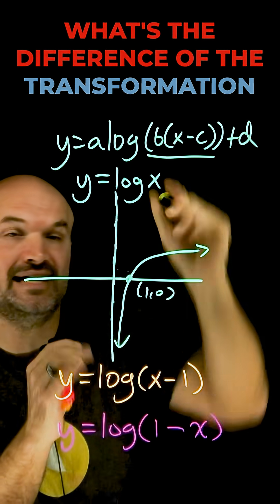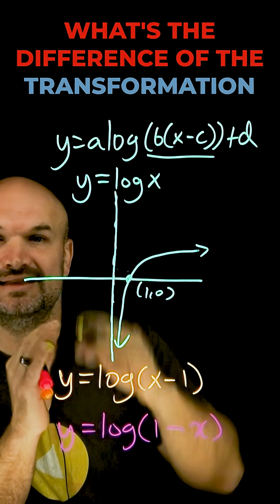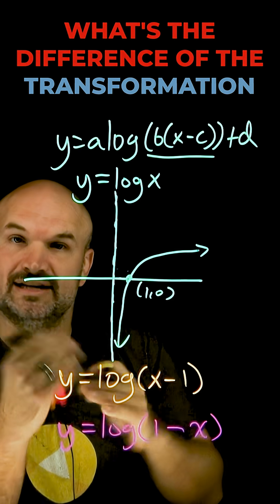When we're adding or subtracting that's going to be a horizontal shift, and when we're multiplying that is going to be a reflection or a stretch and compress.